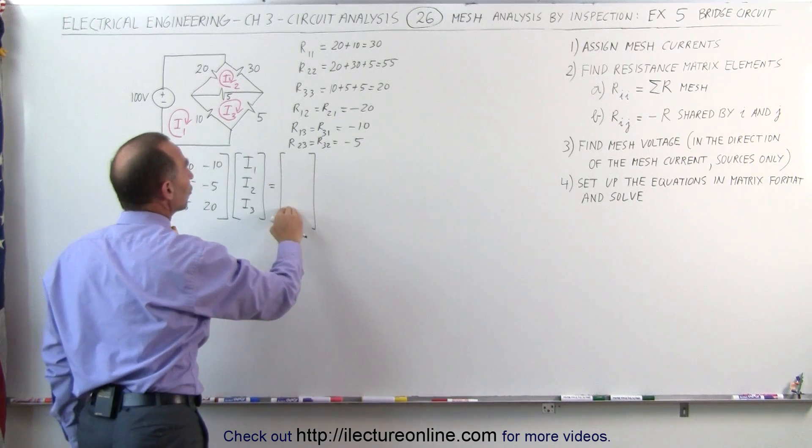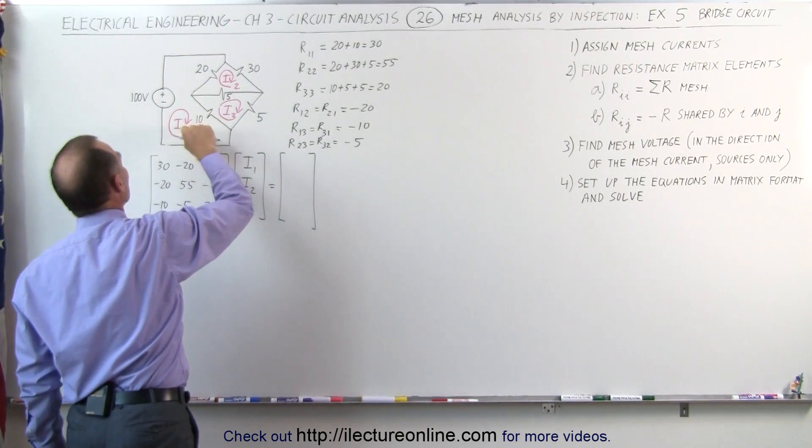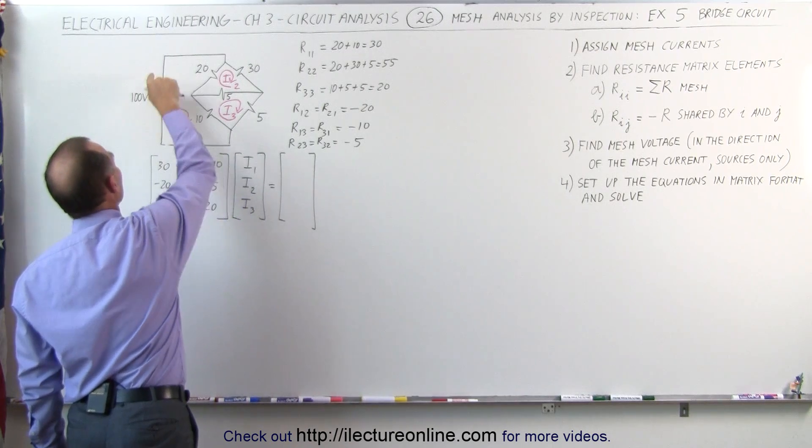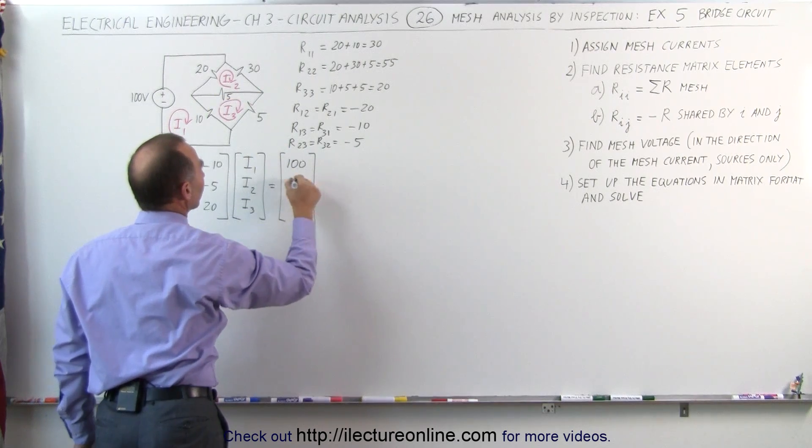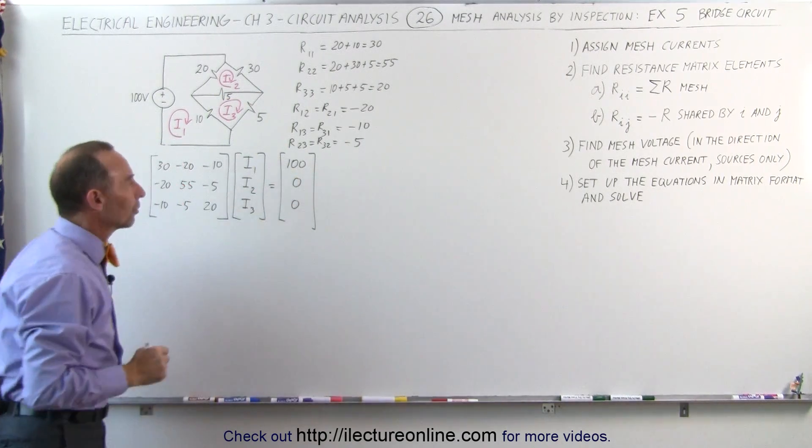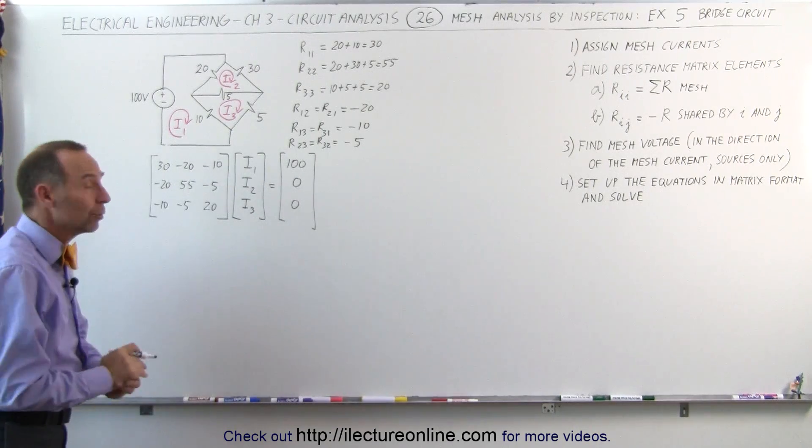We still need to find the voltages for the three loops. When we go around the first loop in the same direction as the current, we go from the negative to the positive end of the voltage source. That's a plus 100 volts. But the other two loops do not have any voltage sources. We plug two zeros in. We're now ready to start solving for the three unknowns, I1, I2, and I3.